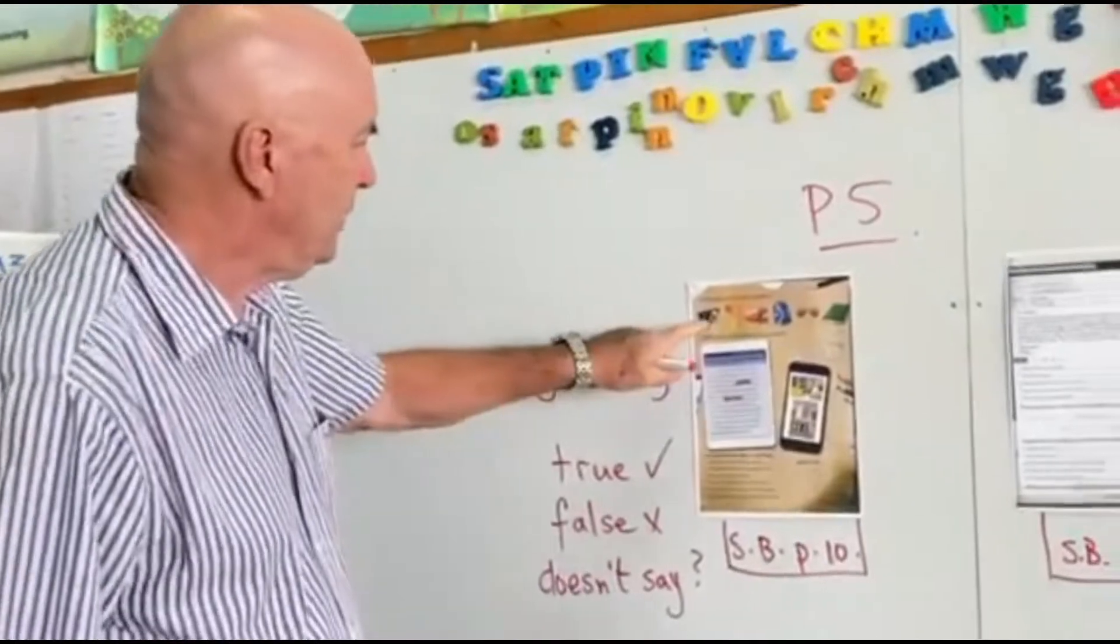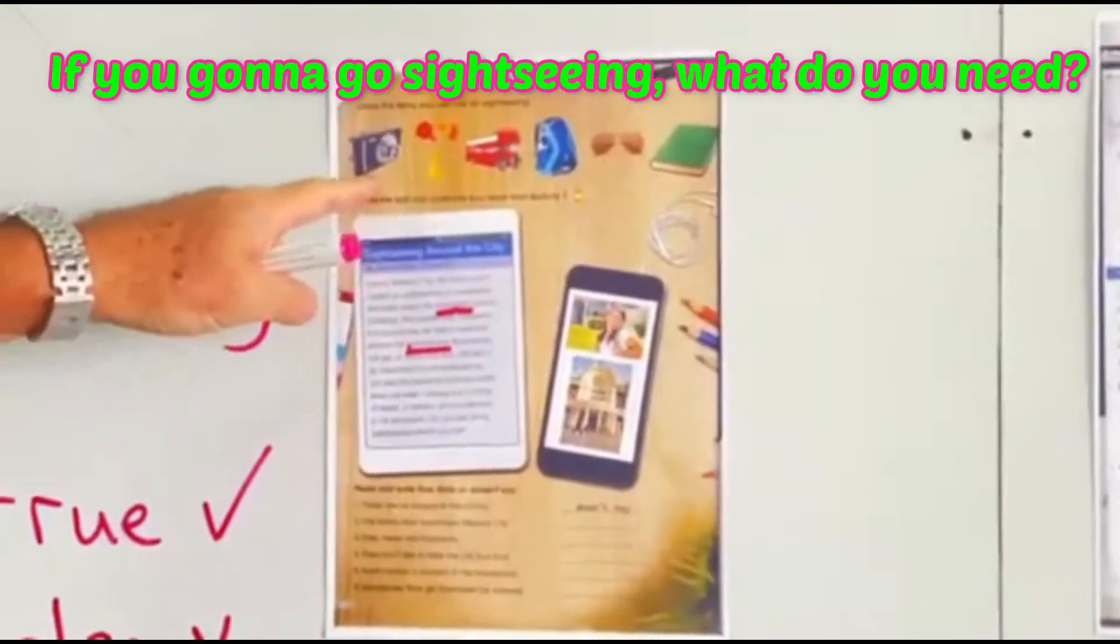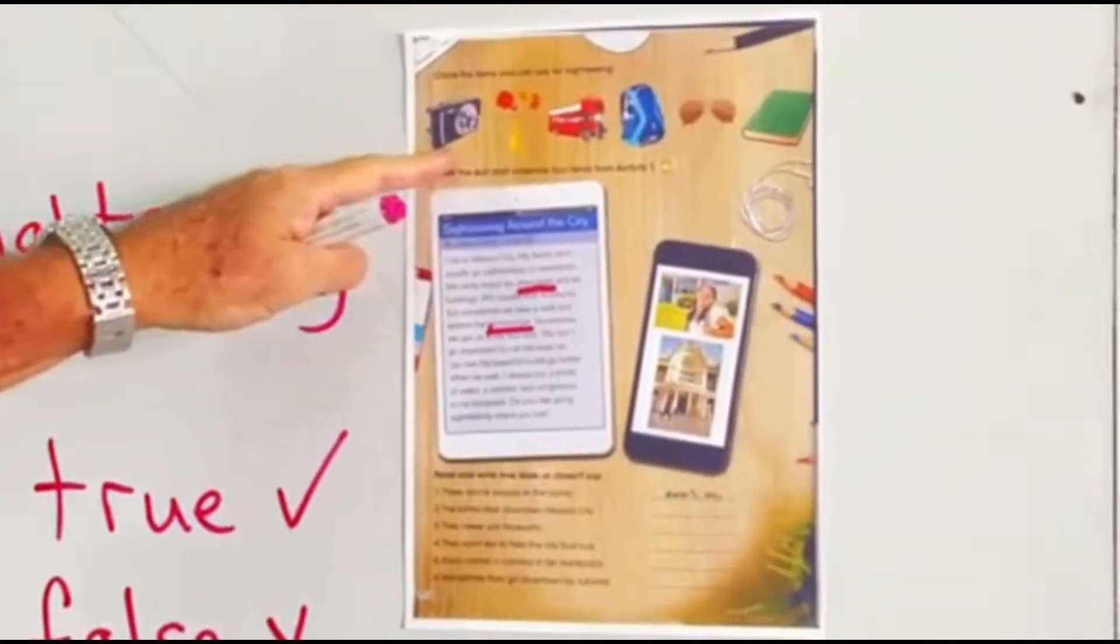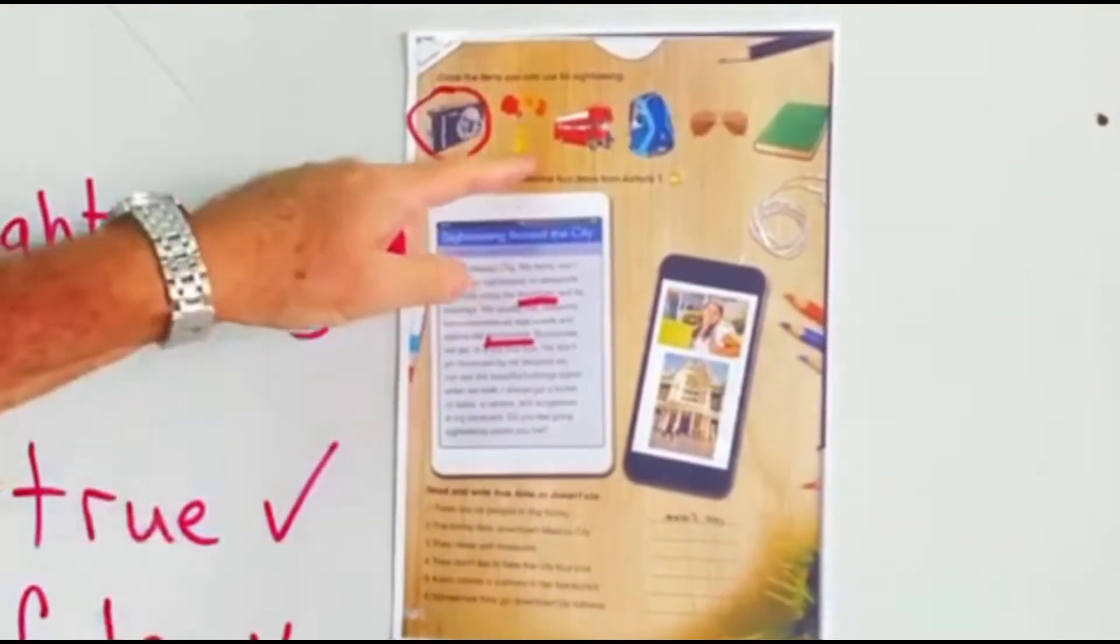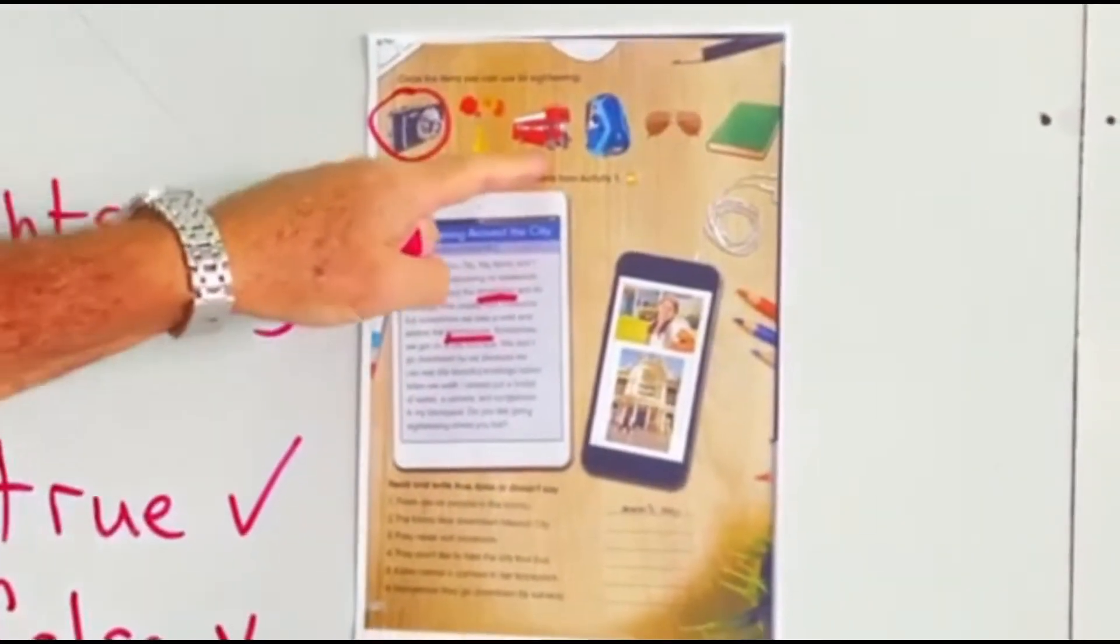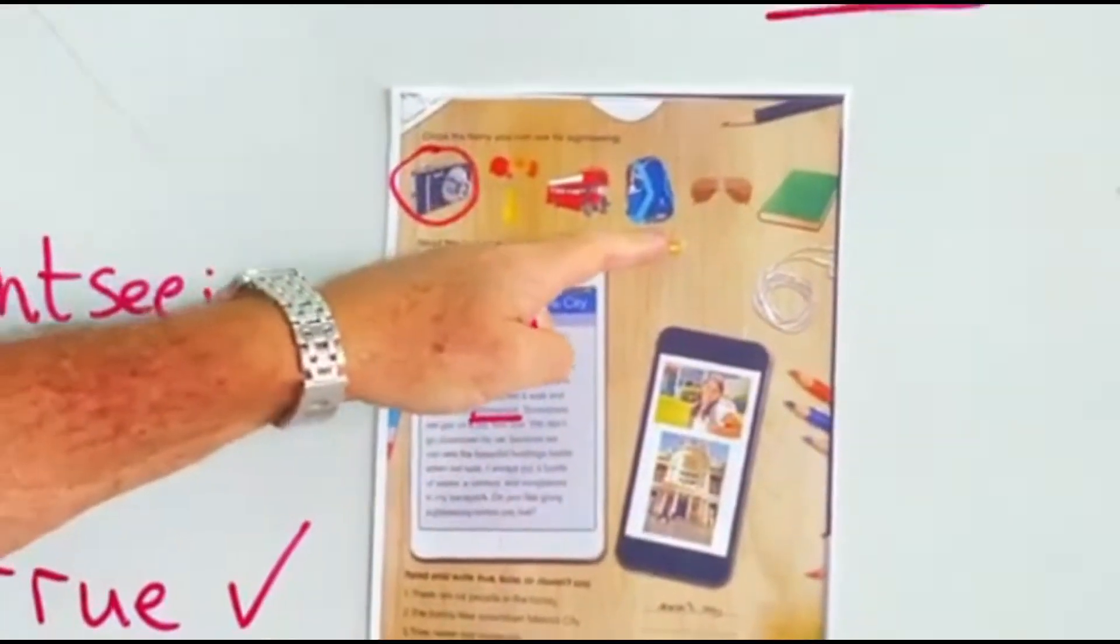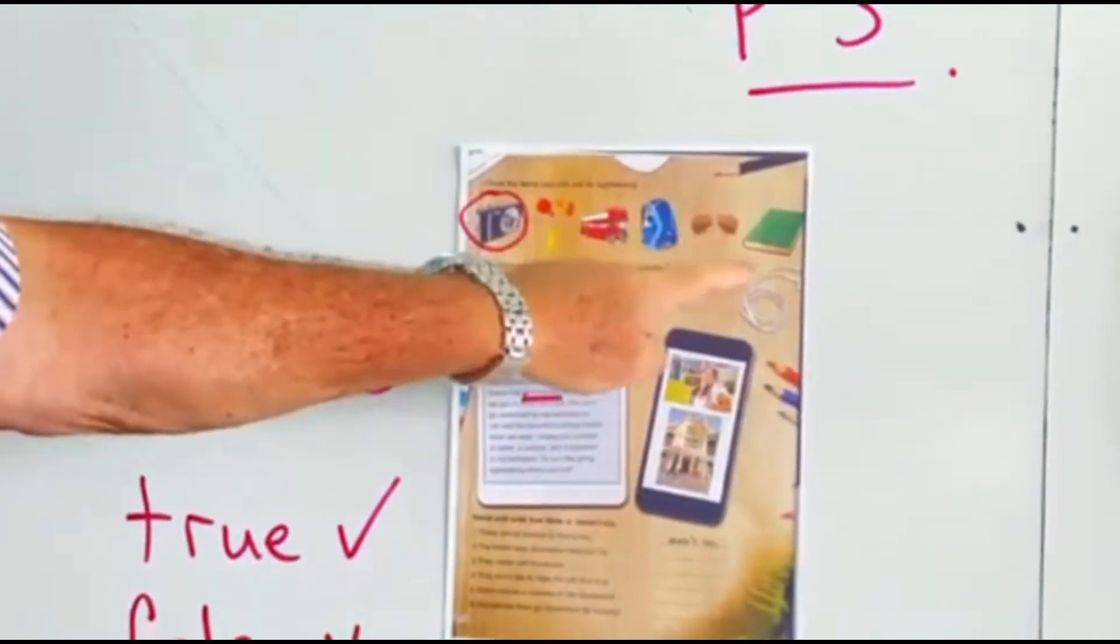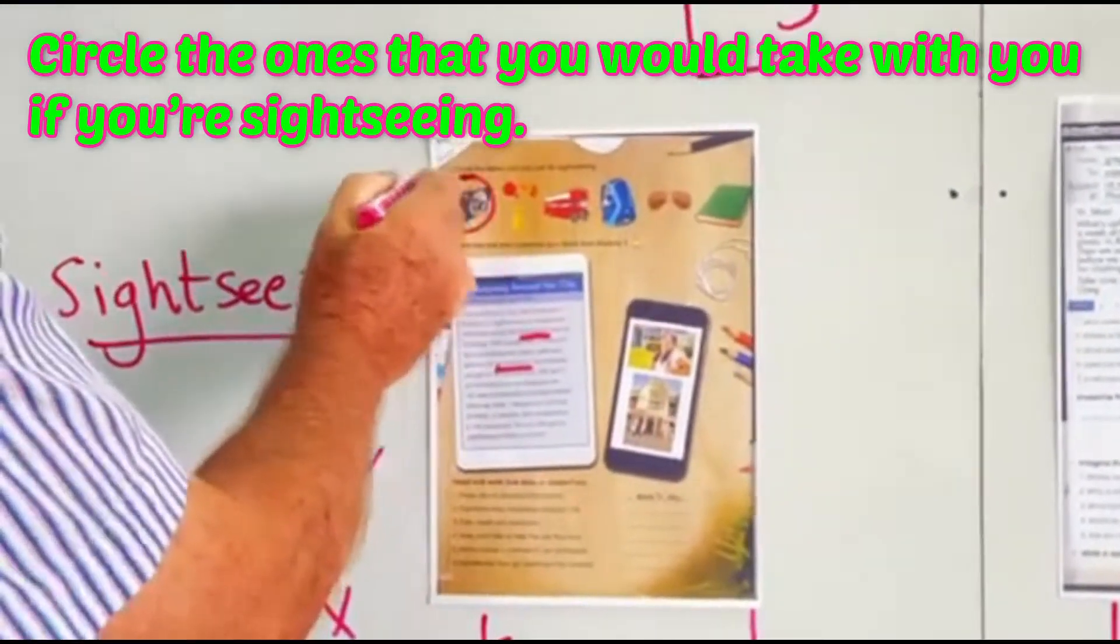First of all, if you're going to go sightseeing, what do you need? A camera, flowers, I don't think so, bus to go around, a bag, sunglasses, book. Circle the ones that you would take with you if you're sightseeing.